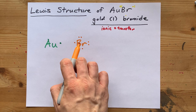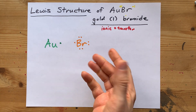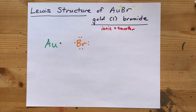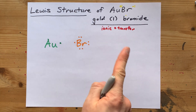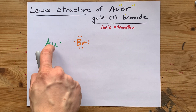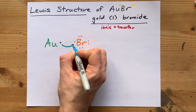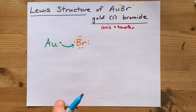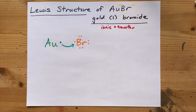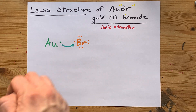Non-metals want a full outer shell of 8 electrons — that's the octet rule. Where is bromine going to get 1 more electron to become stable? The metal, gold, will willingly give its electron up to a non-metal. That will empty out gold's valence shell and complete the octet for bromine's valence shell.